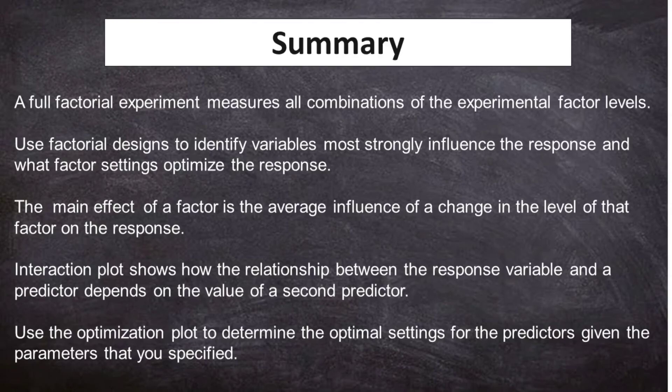A full factorial experiment measures all combinations of the experimental factor levels. Use factorial designs to identify variables that most strongly influence the response and what factor settings optimize the response. The main effect of a factor is the average influence of a change in the level of that factor on the response. The interaction plot shows how the relationship between the response variable and a predictor depends on the value of a second predictor. Use the optimization plot to determine the optimal settings for the predictors given the parameters that you specified.